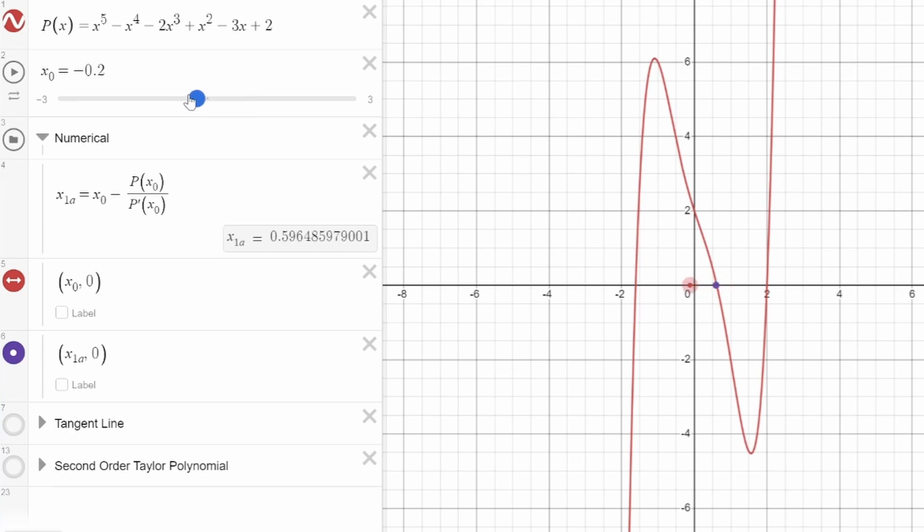You can see that as I move this slider, the red dot moves left and right. What Newton's method says is put x0 into this formula, which takes into account the polynomial that you're trying to approximate as well as its derivative, and it outputs a new x value for you to try, which I've called x1a in this graph and labeled by this purple dot.